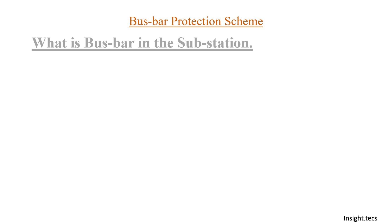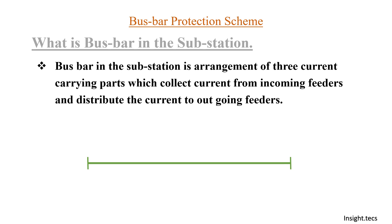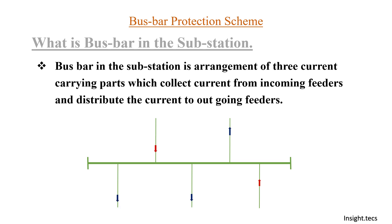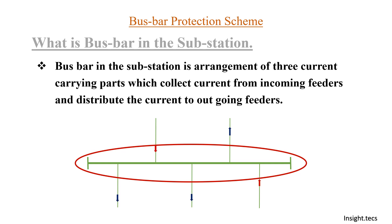So what is basically a bus bar in the substation? We know a bus bar in the substation is just an arrangement of three current carrying parts which collect current from incoming feeders and distribute the current to the outgoing feeders. So basically a bus bar is like a junction where different current paths for incoming and outgoing feeders can be defined. The red arrows indicate the incoming currents and blue arrows indicate the outgoing currents, with the bus bar acting as a junction for both.